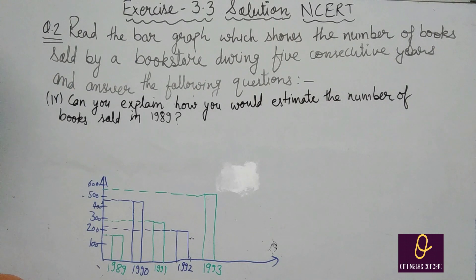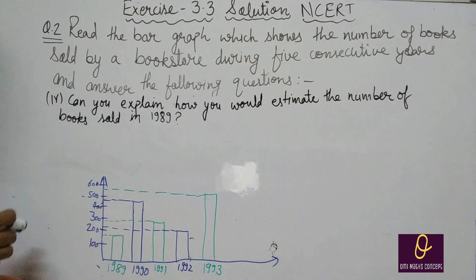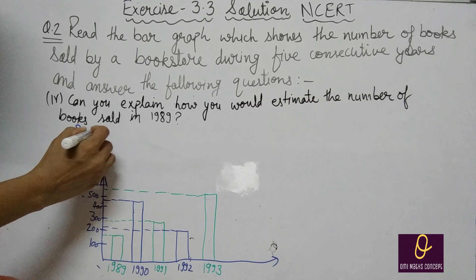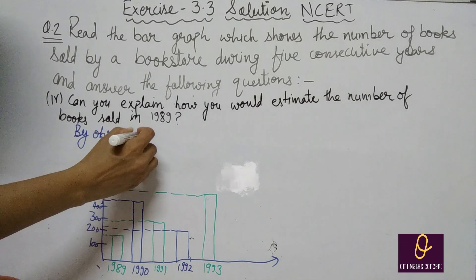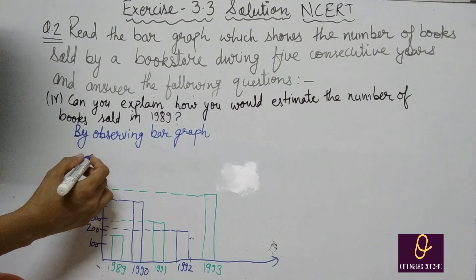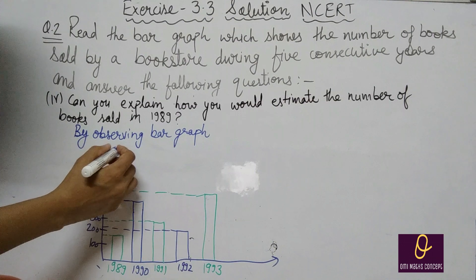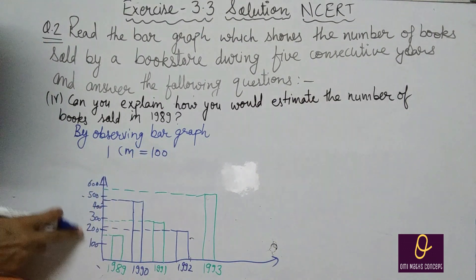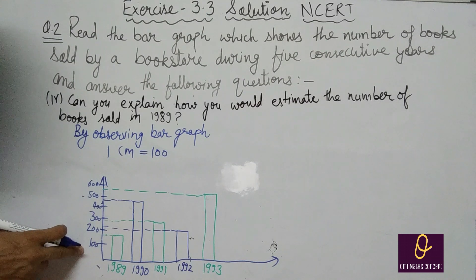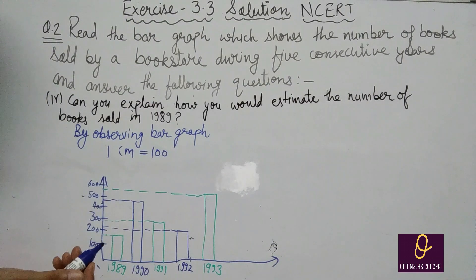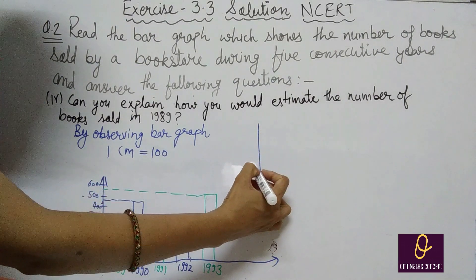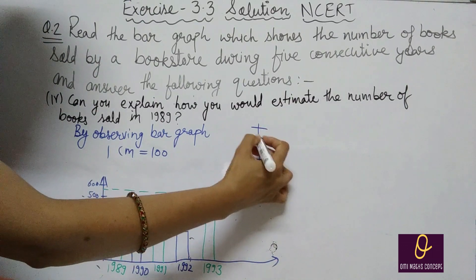Next part: can you explain how you would estimate the number of books sold in 1989? आपको explain करना है कि 1989 में books कितनी थीं. By observing the bar graph: जो यह पूरा 1 cm है, 1 cm equal to 100. आपको find out करना है. अब इसके 4 parts करते हैं. यह मैंने इसके 4 parts किए — यह 100 है और यह 200 है.